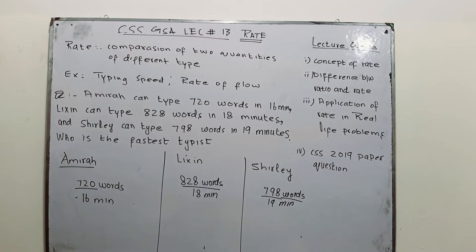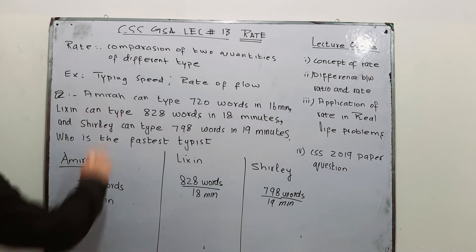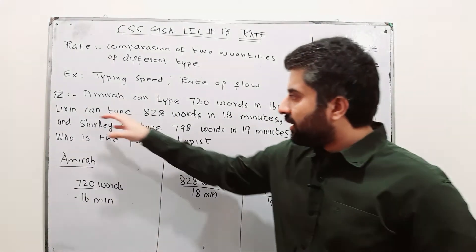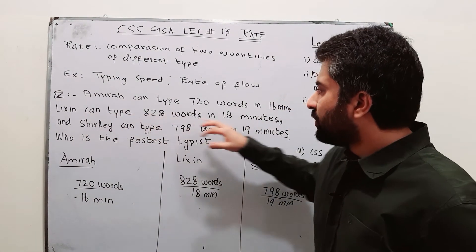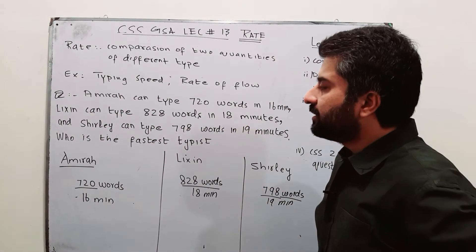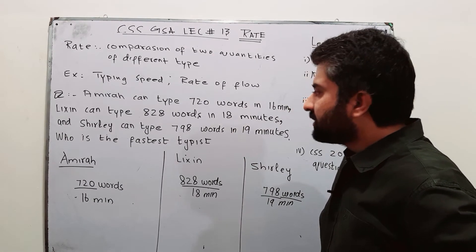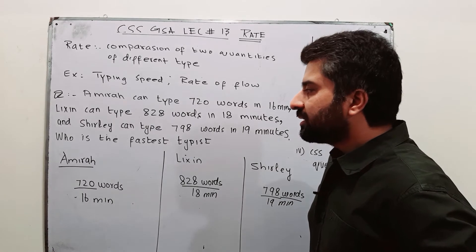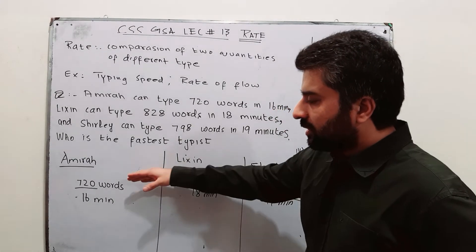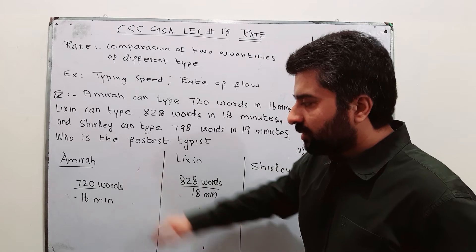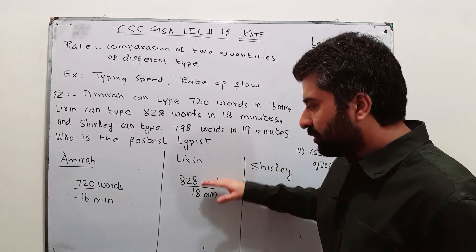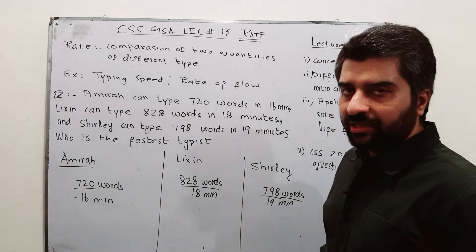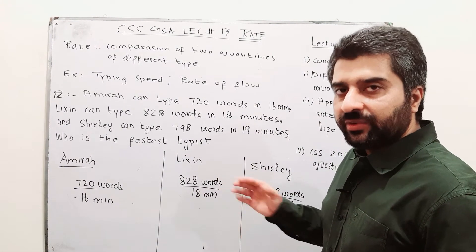Let us attempt some questions regarding rate. Ameera can type 720 words in 16 minutes. Lexin can type 828 words in 18 minutes. And Shirley can type 798 words in 19 minutes. Who is the fastest typist? We need to find their rates and simplify them to express the number of words per minute.